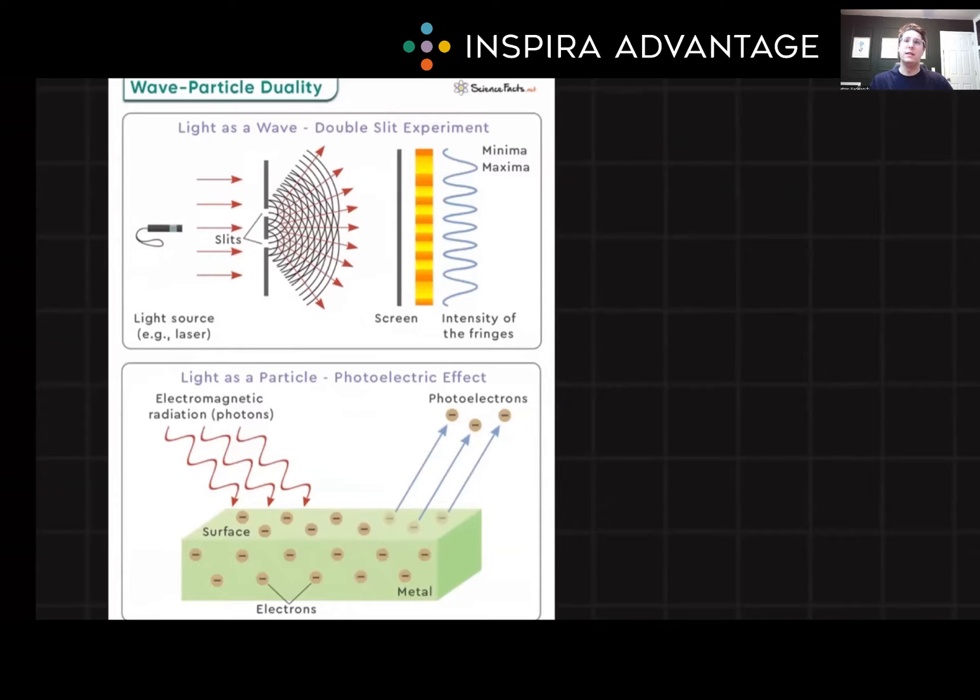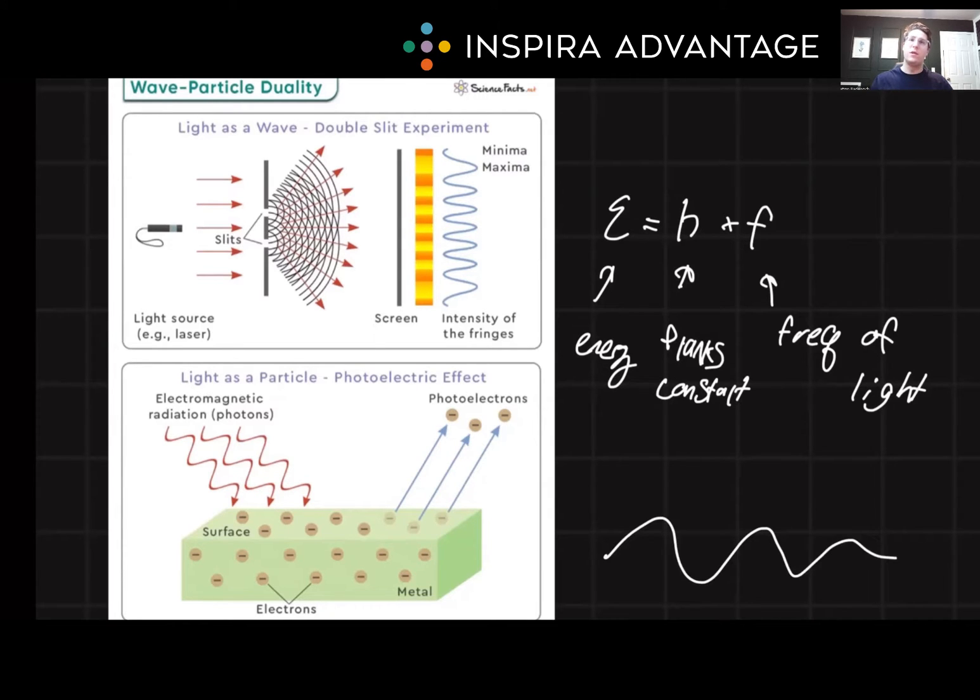The energy of light is given by E equals H times F, where H is Planck's constant and F is the frequency of light, and that would make E energy. In optics, we mainly consider light as a wave, particularly for phenomena like interference and refraction.